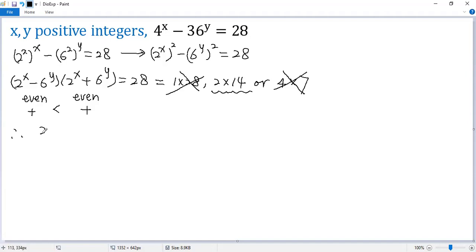So we get 2 to the power of x minus 6 to the power of y equals 2, right? And the second factor, 2 to the power of x plus 6 to the power of y equals 14. Denote the first as 1, the second as 2.